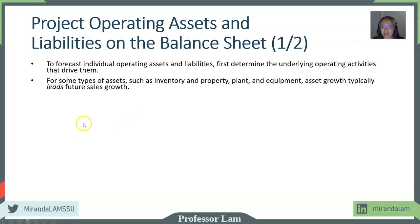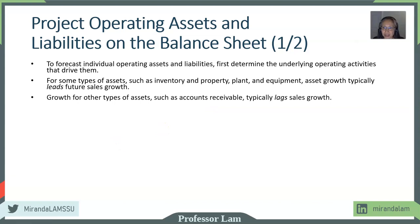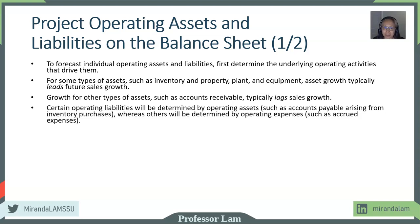For some kinds of assets, such as inventory and property, plant and equipment, asset growth will lead sales growth — meaning we have to stock up on inventory and purchase the necessary equipment before we can generate the sales. Other types of assets, such as accounts receivable, will lag sales because we create accounts receivable after sales occur. Other liabilities, such as accounts payable due to inventory purchases, are automatically generated and determined by operating assets like inventory. Others are determined by operating expenses, such as accrued expenses.